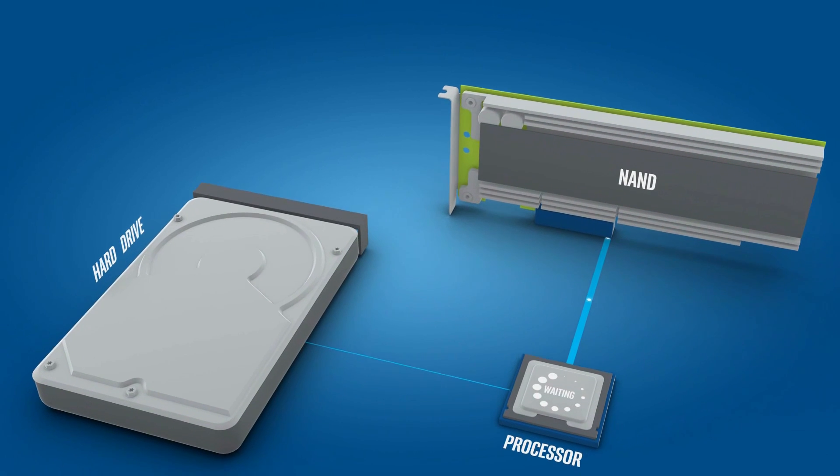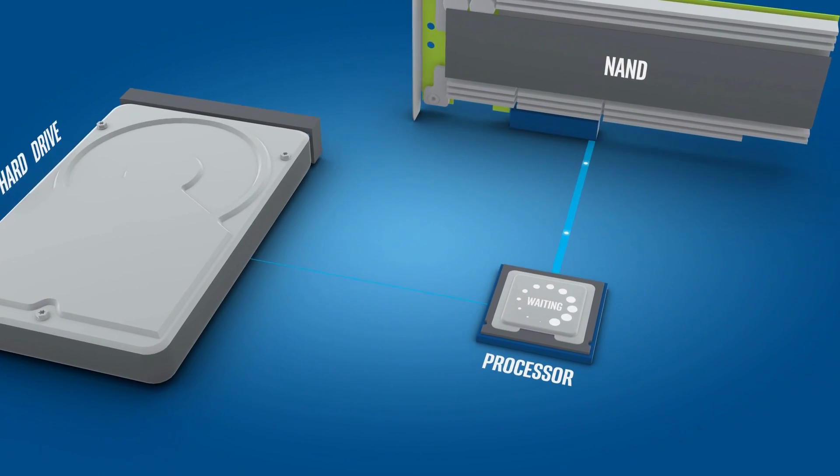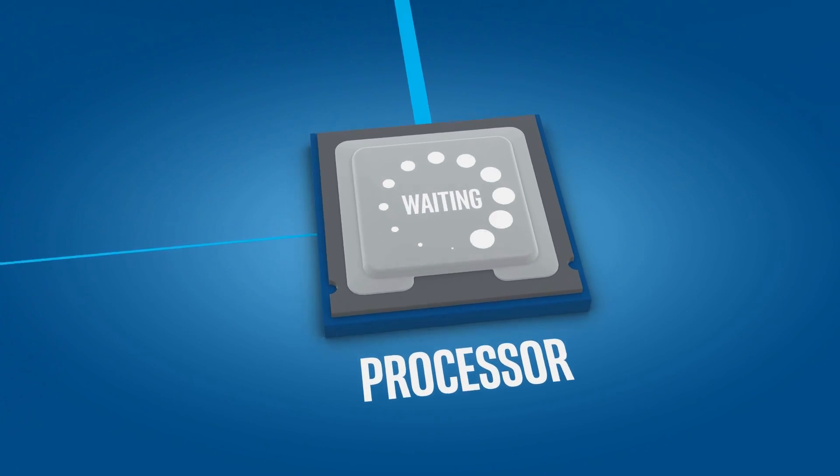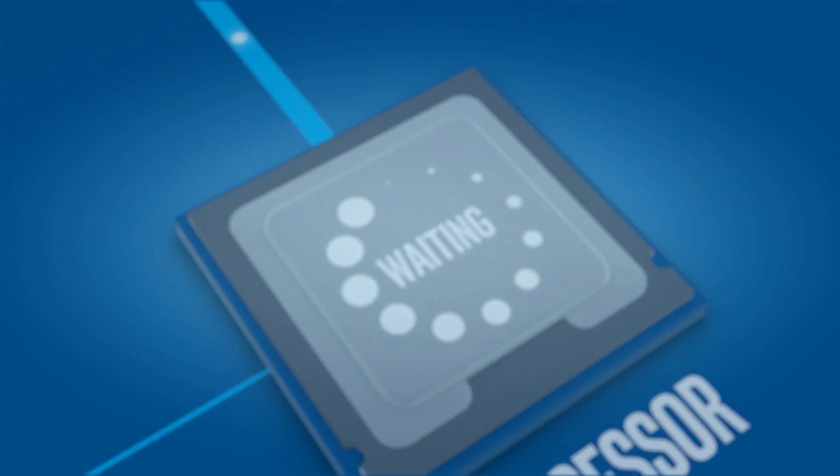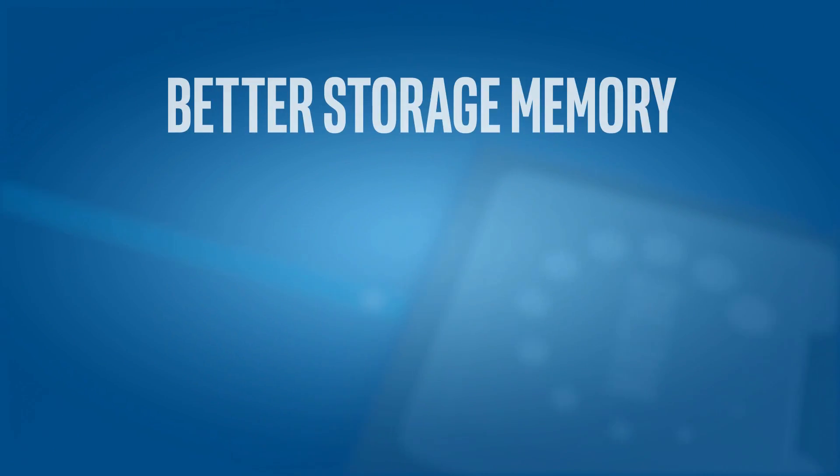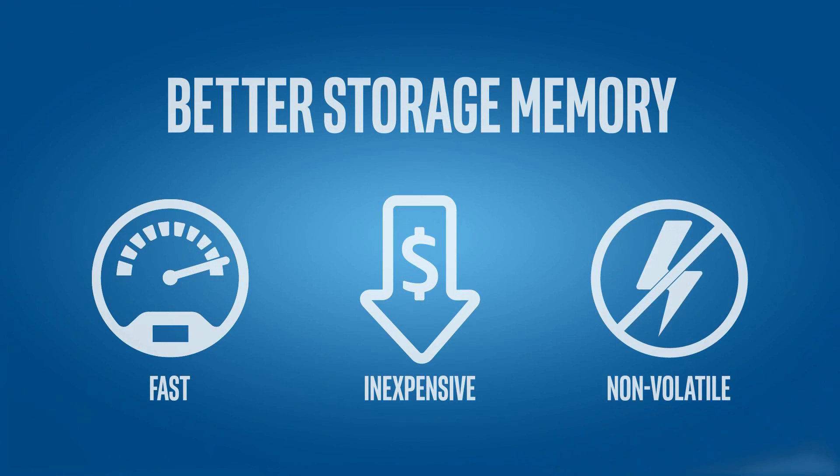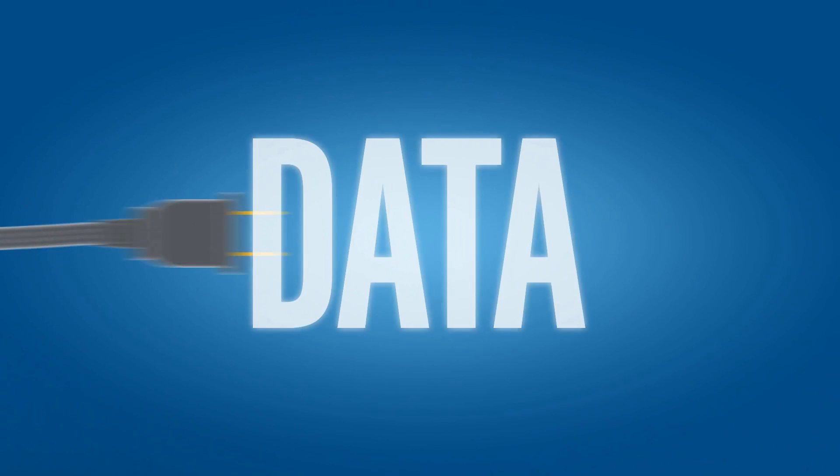What if your storage device were that much faster? You could unleash the power of your processor instead of it working at a fraction of its potential like today. Eliminating that bottleneck requires better storage memory that is fast, inexpensive, and non-volatile, so your data doesn't go away when your power does.